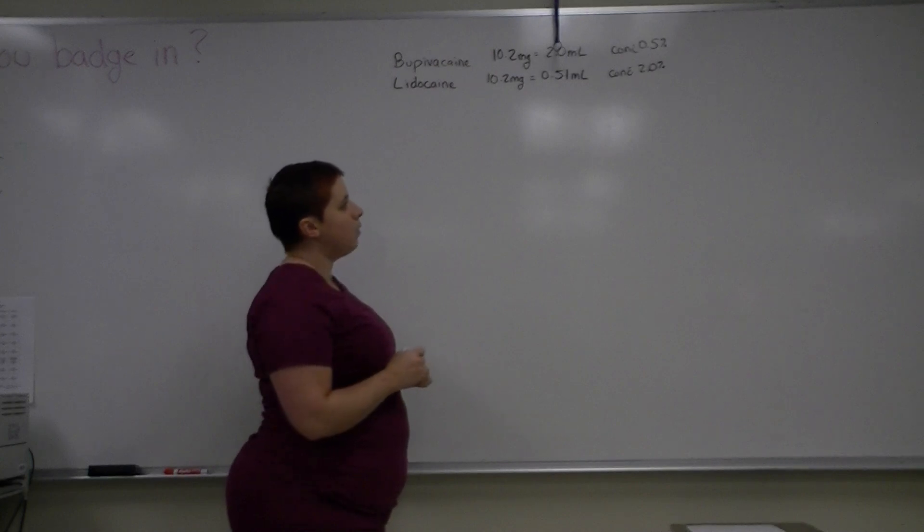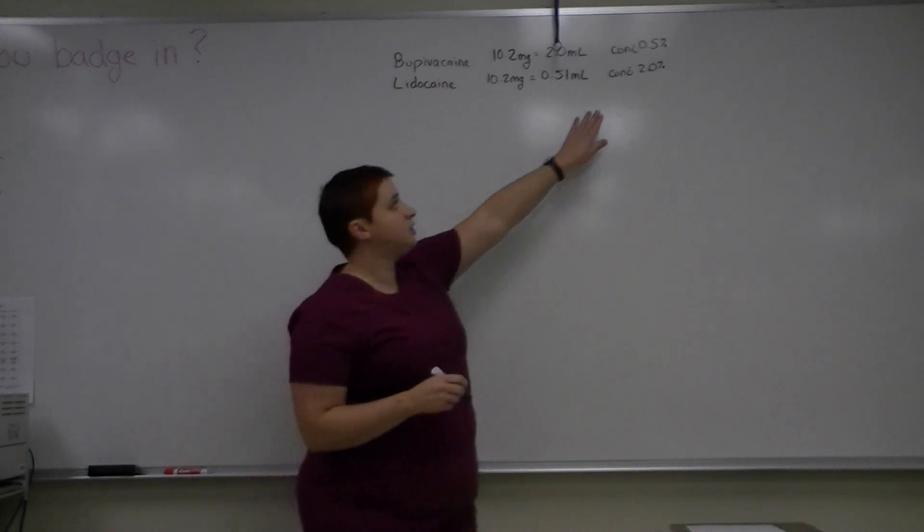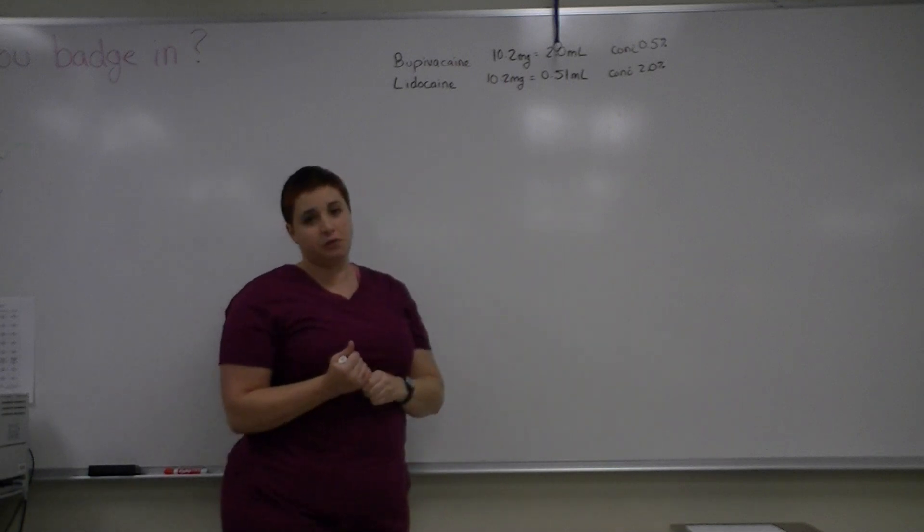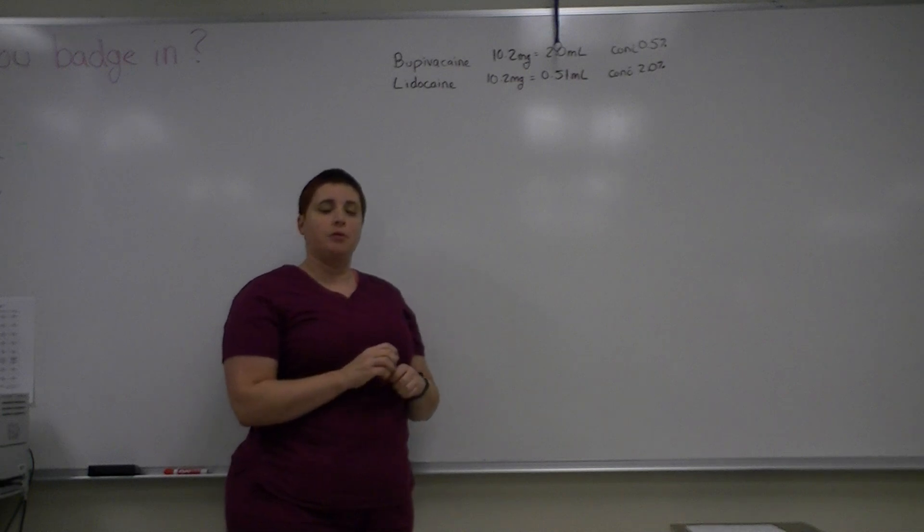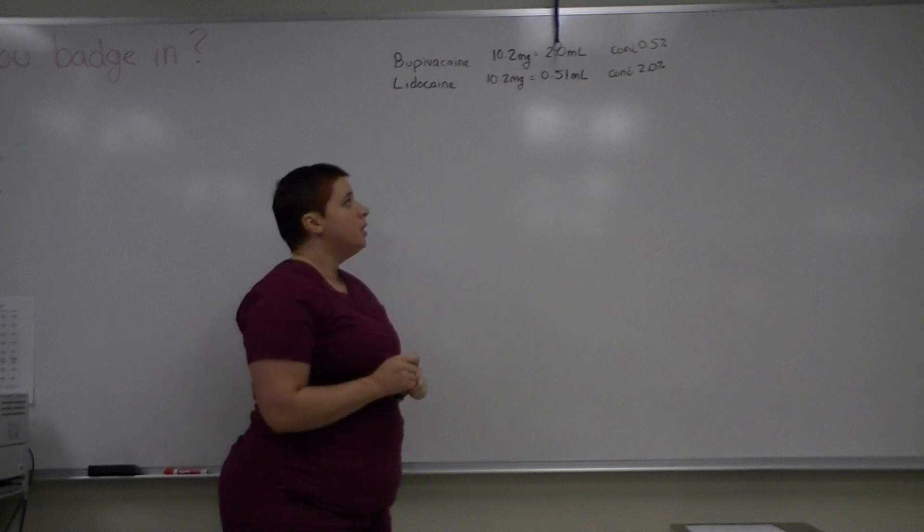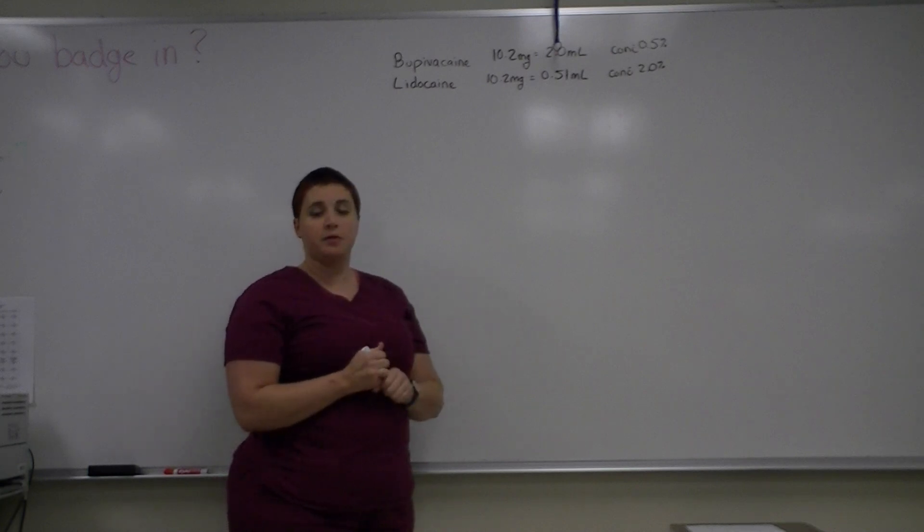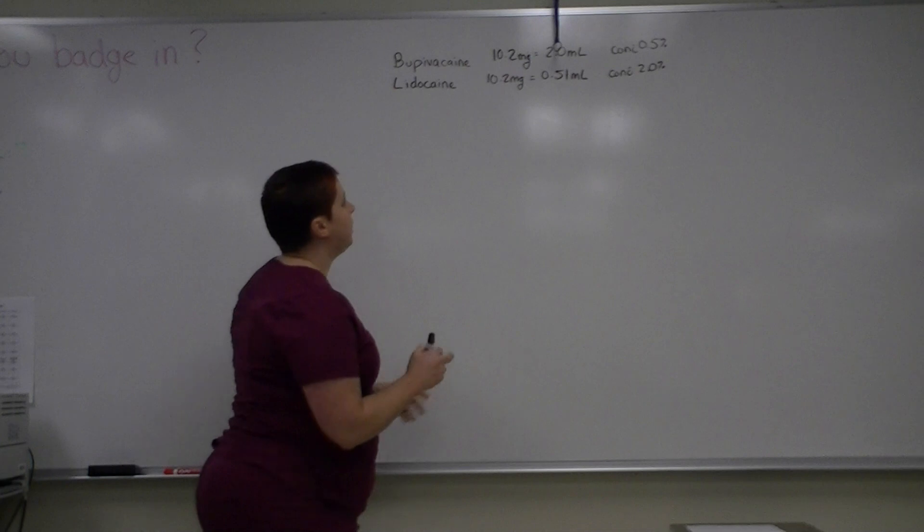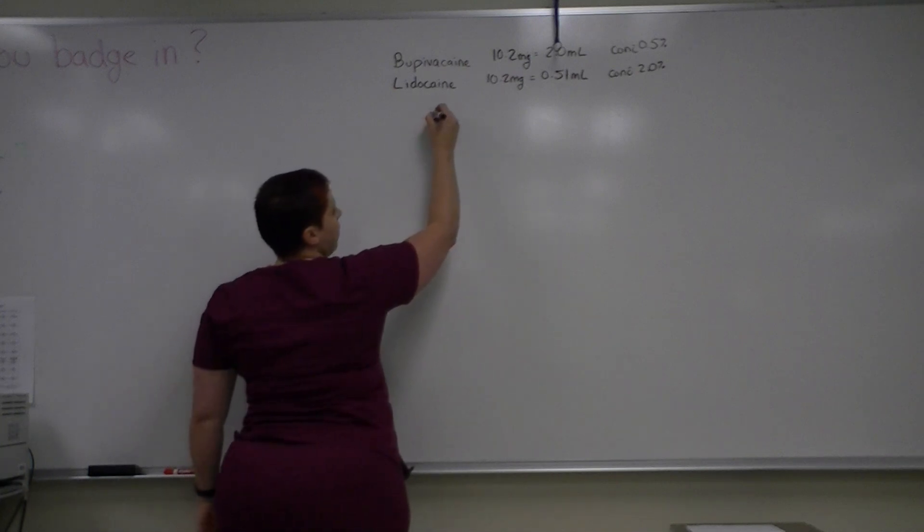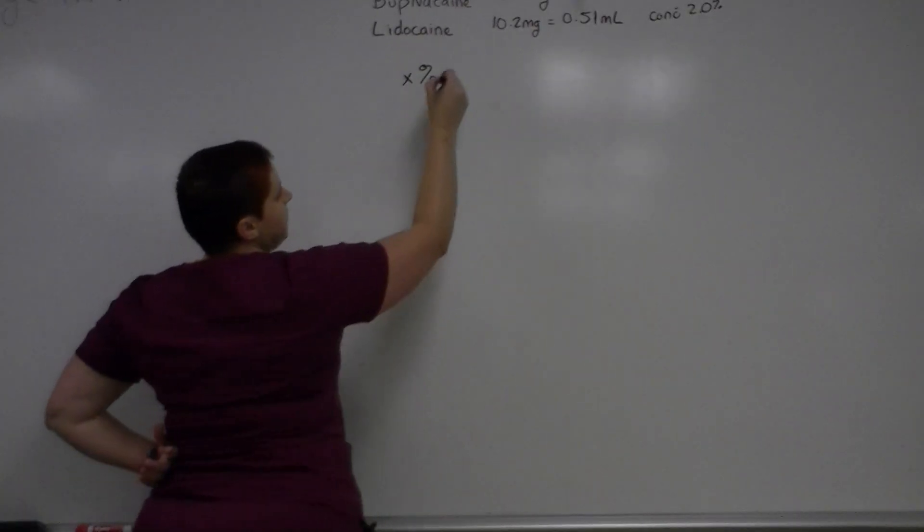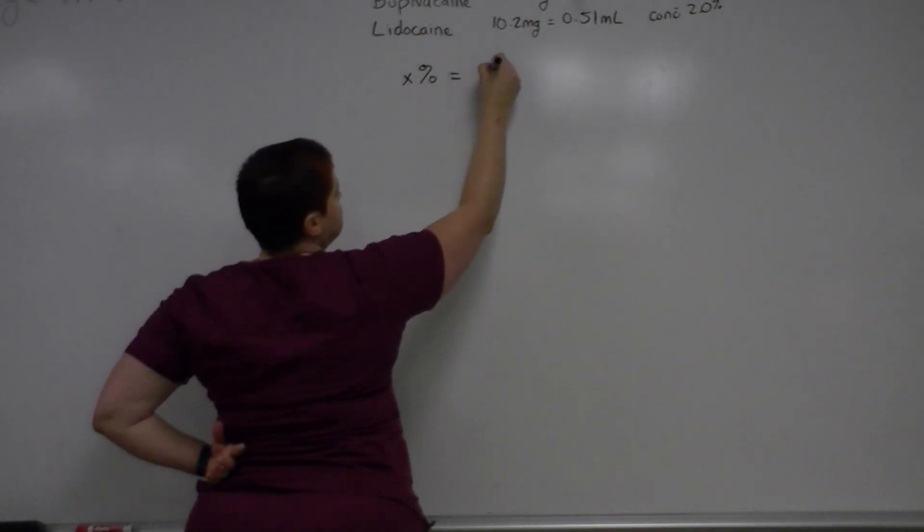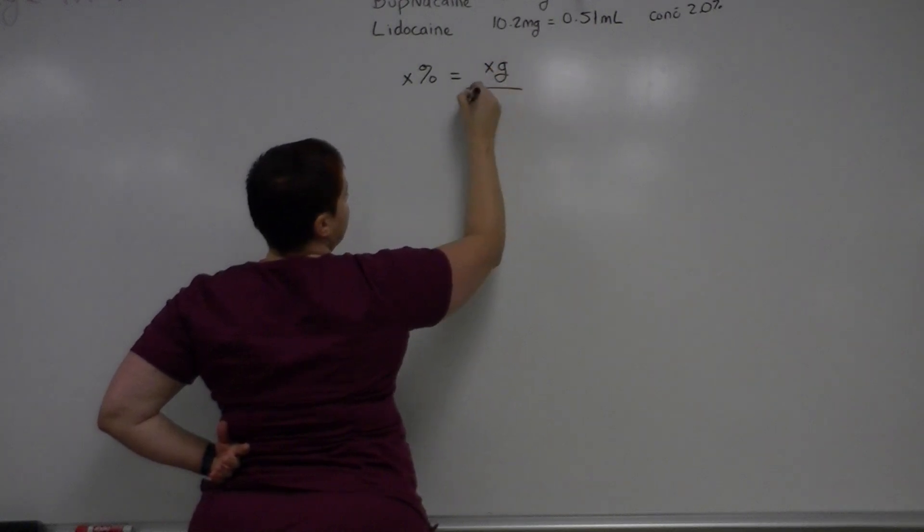Just as a reminder, I want to go over the concentrations of both of these drugs. They are in percentage form. So when you're doing your math, you can't use the percent number. You need to turn it into a milligram per milliliter notation in order to put it into your dimensional analysis. So as a reminder, remember that whenever you have a drug concentration in a percent, you have some number here. This equals some number in grams over 100 milliliters.